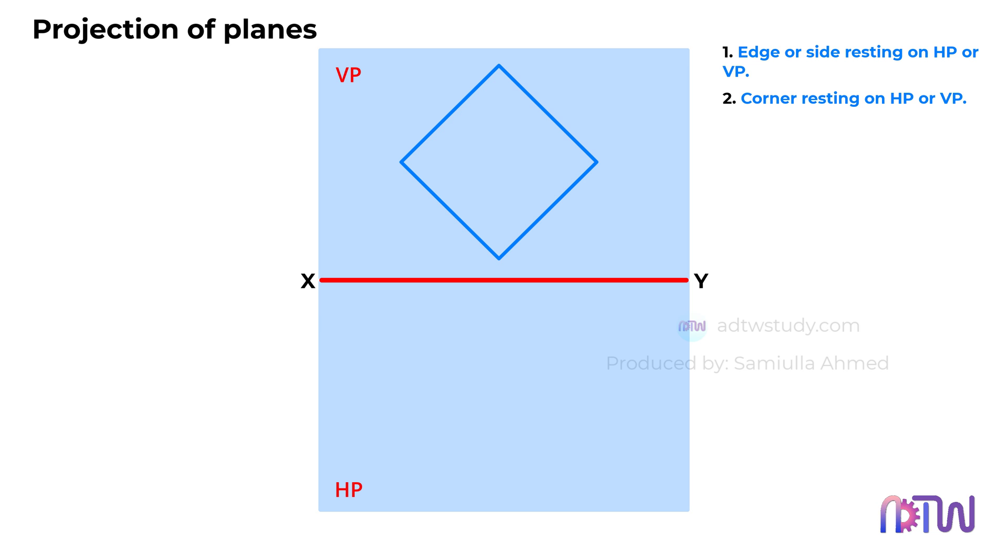By keeping these points in mind, you can accurately represent the orientation and position of planes in 2D projections, which is a fundamental skill in engineering drawing. This approach ensures clarity and precision in conveying the spatial relationships of the planes.